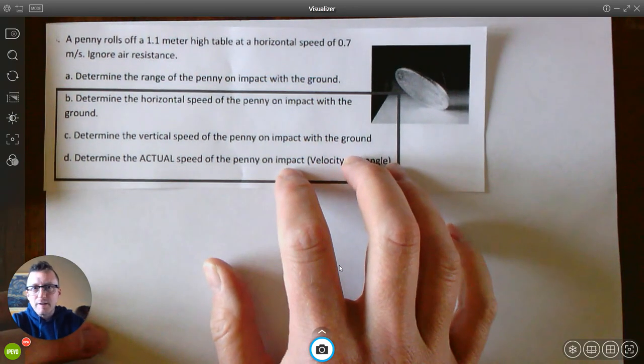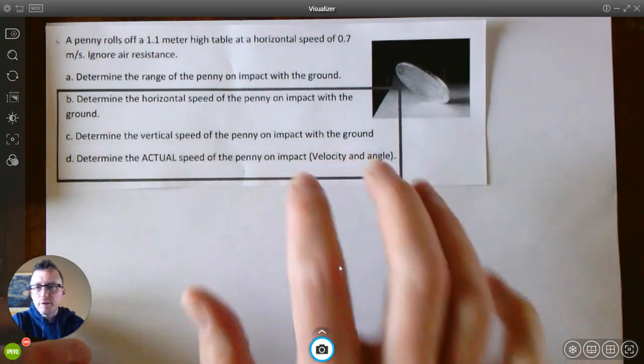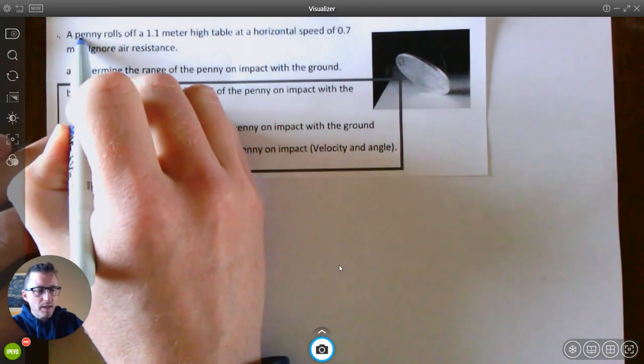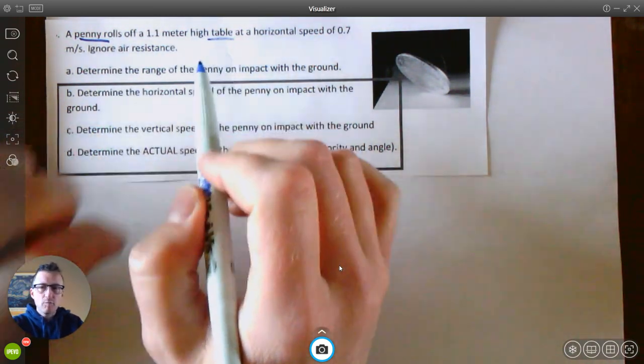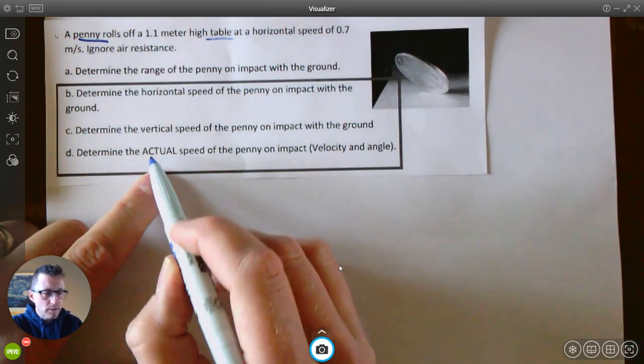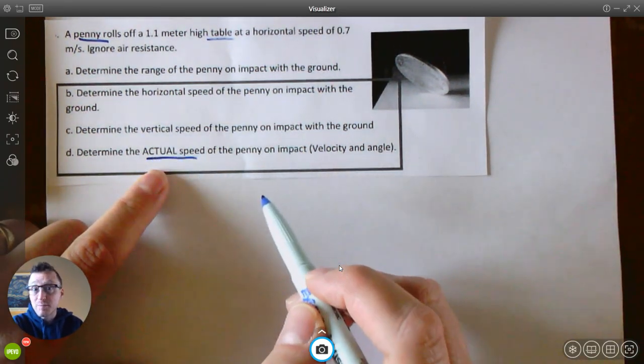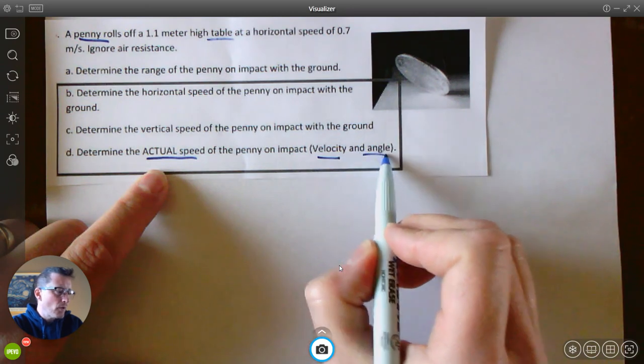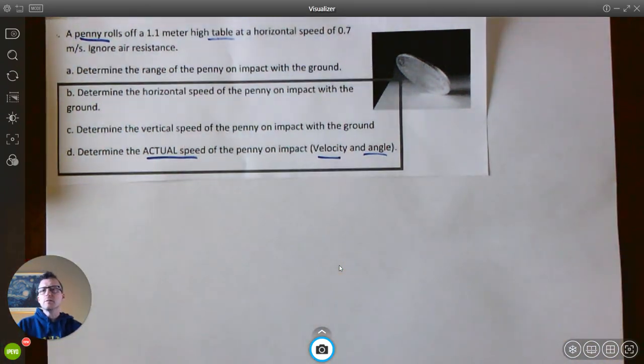Hey everybody, how's it going? I thought I'd talk about a type of projectile problem where we have something rolling horizontally off of an elevated surface. In this case, we have a penny on a table and it rolls off the table. What we want to figure out is what is the speed of the penny when it lands. So our final goal, our final destination is what we would call the actual speed and that requires us to figure out how fast it's flying but also an angle.